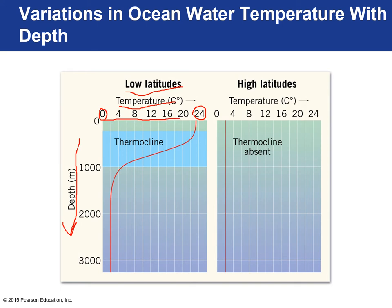At the surface of the ocean at low latitudes, it's really hot — on average 23°C — and the temperature remains stable up until about 100 meters. Then there's a drastic decrease in temperature, which levels off around one kilometer. The temperature levels off to about 2–3 degrees and remains at that temperature down to two and three kilometers of depth. This area of rapid decrease in temperature we refer to as the thermocline.